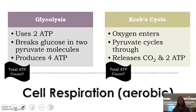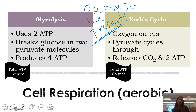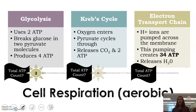The next step is the Krebs cycle. Importantly, oxygen must be present for this to happen. If oxygen is not present, the process moves to something else — which we'll cover after aerobic respiration. With oxygen present, pyruvate cycles through, releasing CO2 — that's what we breathe out — and producing two ATP. So we made two ATP in glycolysis and two in Krebs, giving us a total of four ATP so far. But remember the formula had 38.